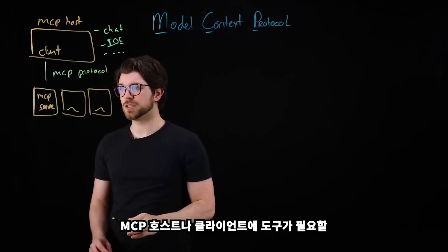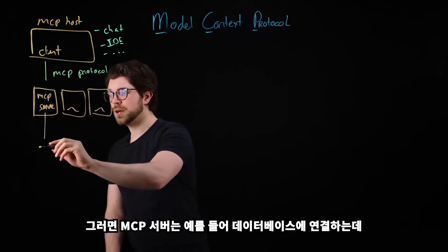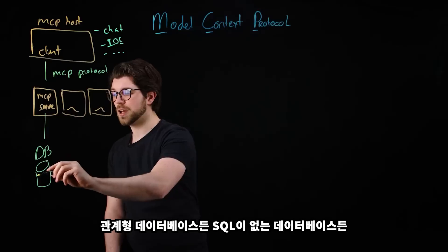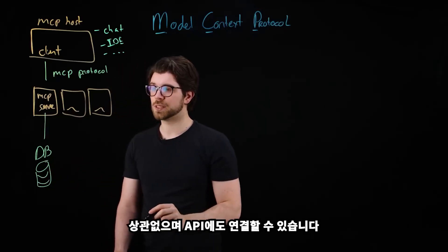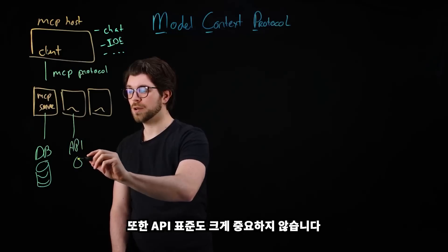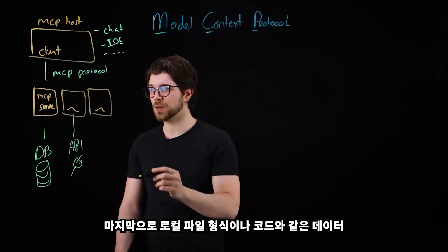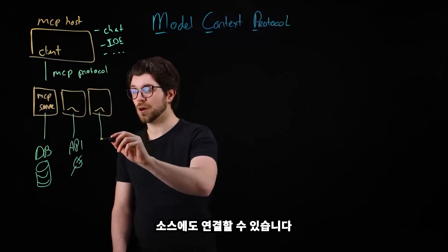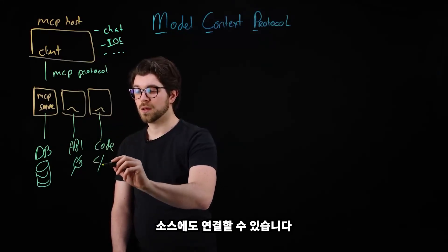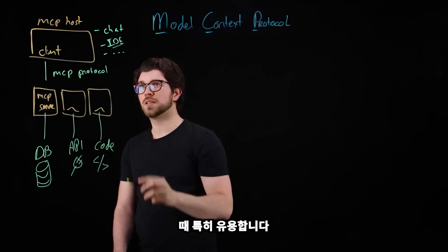Whenever your MCP host or client needs a tool, it's going to connect to the MCP server. The MCP server will then connect to, for example, a database — it doesn't matter if it's a relational or NoSQL database. It could also connect to APIs, regardless of the API standard. Finally, it could connect to data sources such as a local file or code, which is especially useful when building something like a code assistant in your IDE.